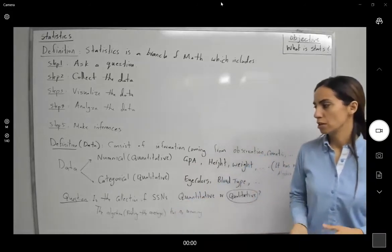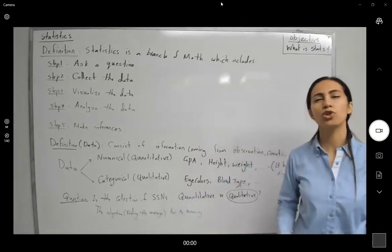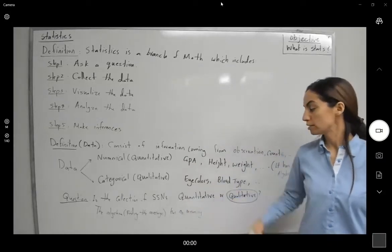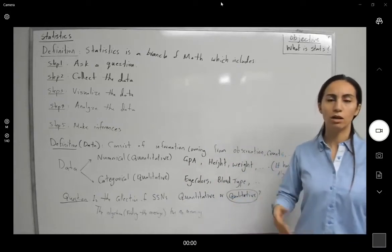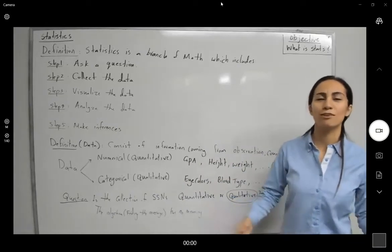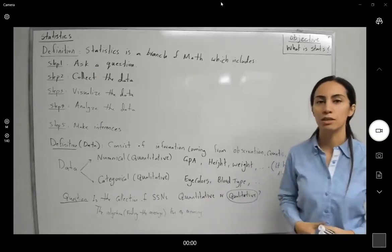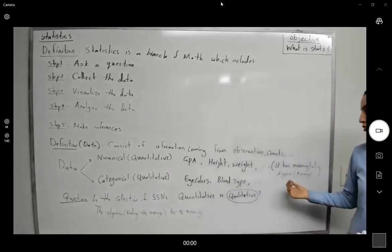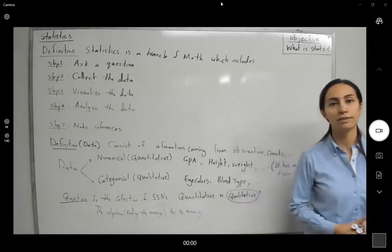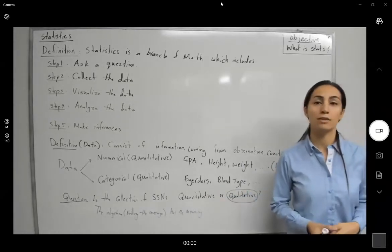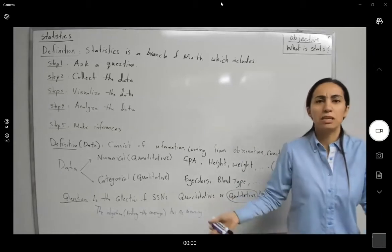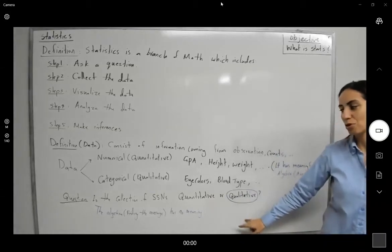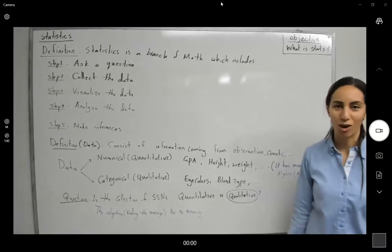Take a look at this question. Suppose you have a collection of social security numbers. Is the collection quantitative or qualitative? Well, you might say, hey, since social security numbers are just numbers, it must be numerical or quantitative. But it's not the case. If I try to find the average of social security numbers, it has no meaning. What's the meaning of the average social security number? It has no meaning. So you're going to say that, hey, since the algebra finding the average has no meaning, it is qualitative.